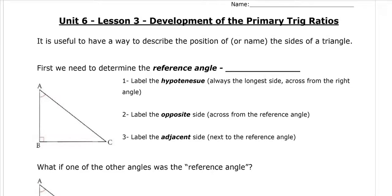Unit 6, Lesson 3: the development of the primary trig ratios. We're going to deal with right-angle triangles in this unit. We specifically study right-angle triangles, and we need to know how we are going to describe the parts of a right-angle triangle to help us with some of the things we're going to learn.